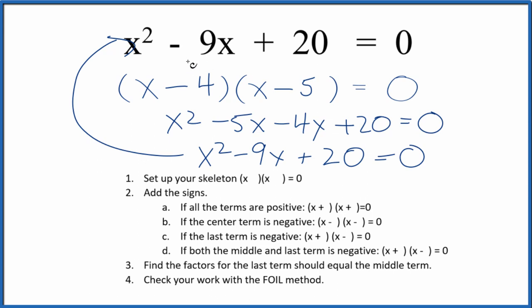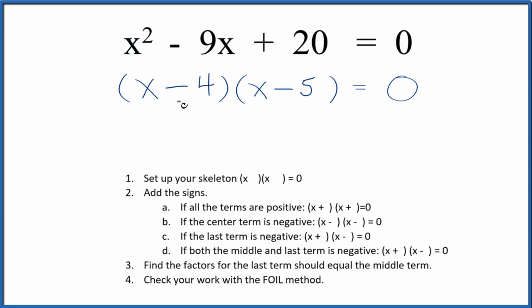Let's find the values for x here that will make this all 0, make this a true statement, 0 equals 0. So we say x minus 4 equals 0, so x would equal 4. Over here, x minus 5 equals 0, so x equals 5.